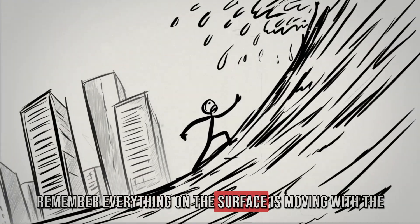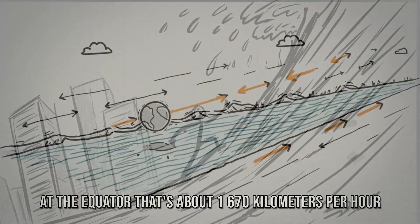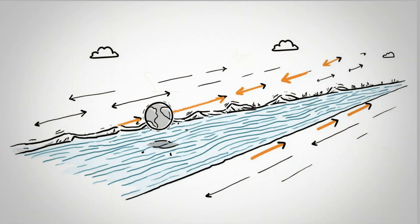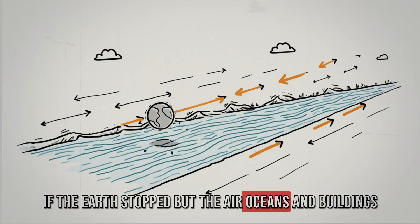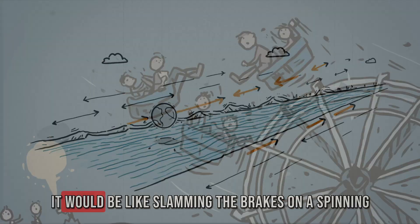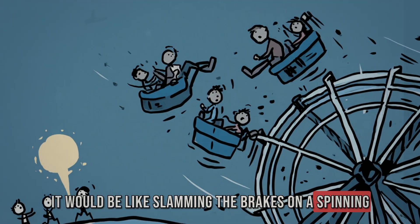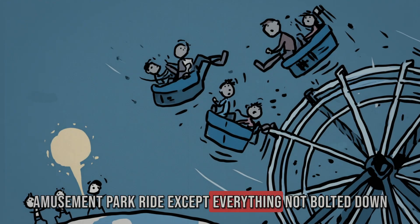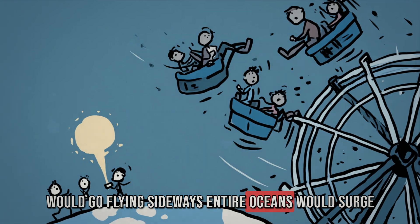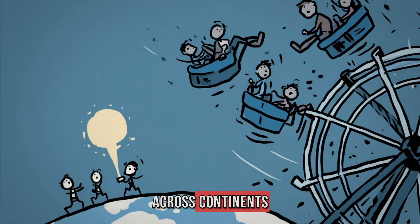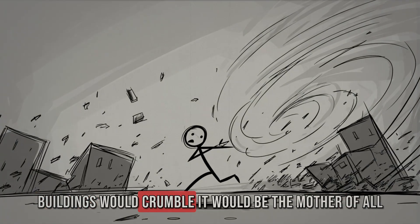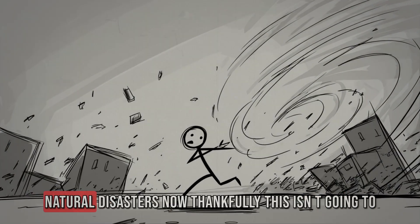Remember, everything on the surface is moving with the Earth. And at the equator, that's about 1,670 kilometers per hour. If the Earth stopped but the air, oceans and buildings didn't, they'd keep moving at that speed. It would be like slamming the brakes on a spinning amusement park ride. Except everything not bolted down would go flying sideways. Entire oceans would surge across continents. The atmosphere would whip into colossal windstorms. Buildings would crumble. It would be the mother of all natural disasters.